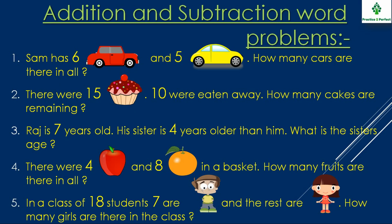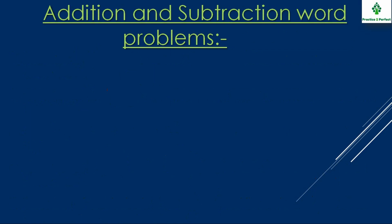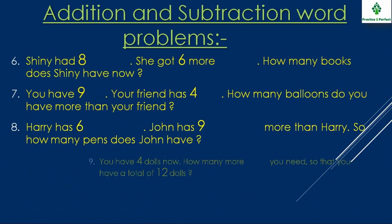Sam has 6 red cars and 5 yellow cars. How many cars are there in all? After reading the problem, the kid should be able to identify that this is an addition problem and should be able to write that 6 plus 5 is equal to 11. So here there are about 10 word problems both related to addition and subtraction.